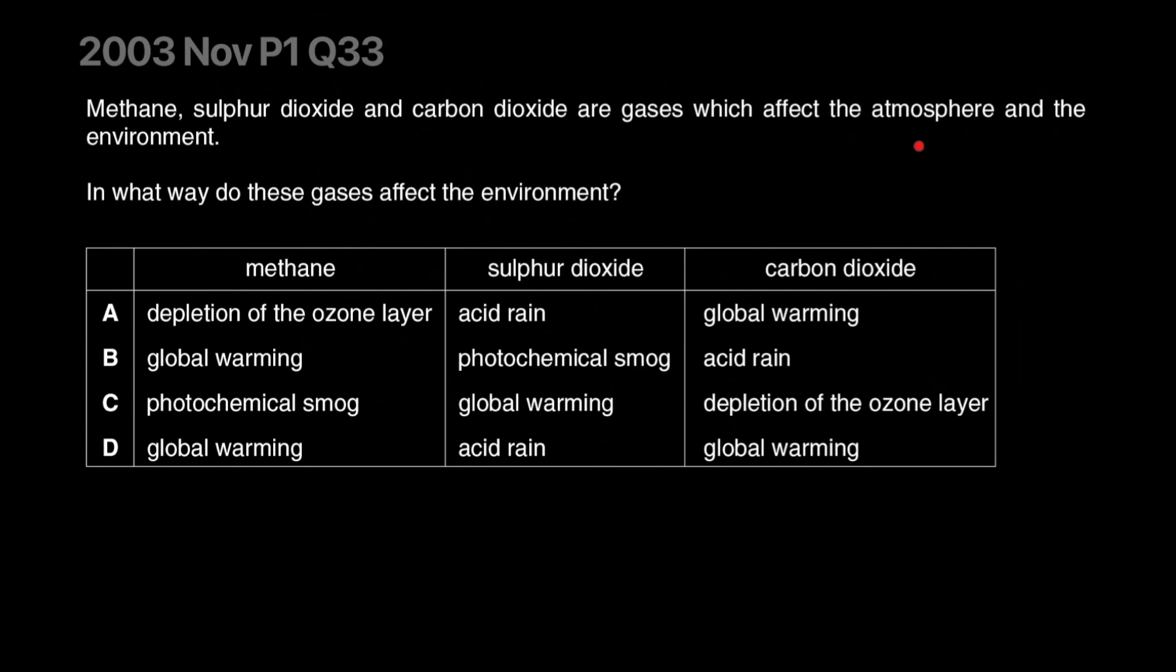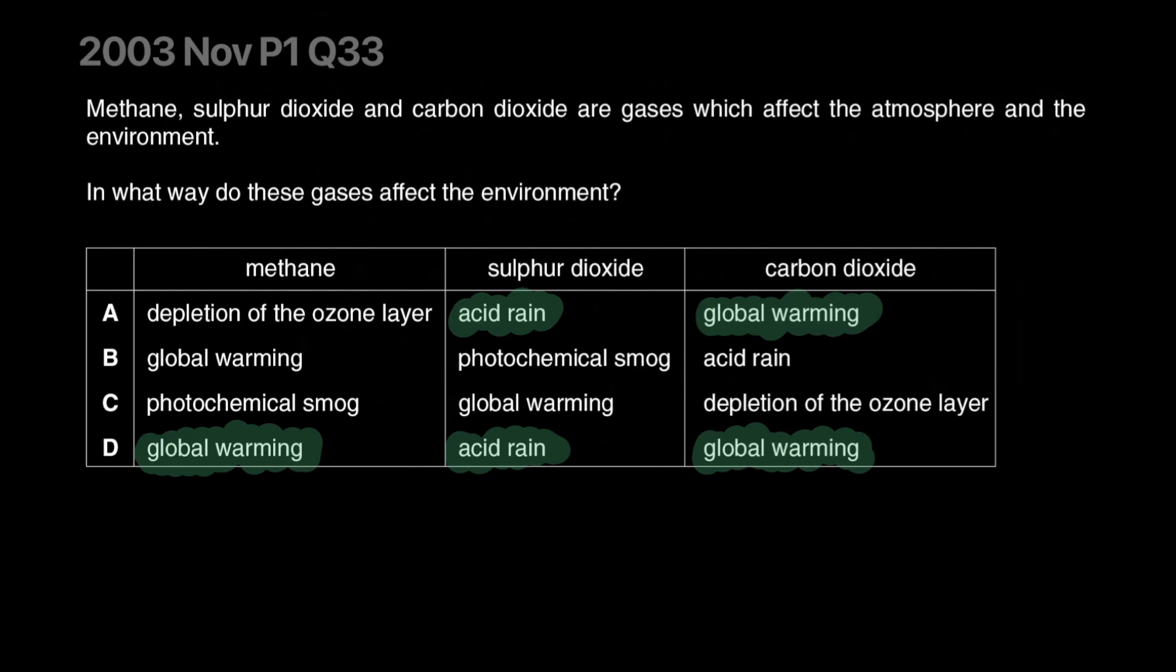Methane, sulfur dioxide and carbon dioxide are gases which affect the atmosphere and the environment. In what way do these gases affect the environment? I think everyone can jump to the conclusion that sulfur dioxide causes acid rain and carbon dioxide will cause global warming. Methane does cause global warming. It's a more potent global warming gas, but it doesn't live in the atmosphere for as long as carbon dioxide. Once carbon dioxide is there it just stays. Depletion of ozone layer is only because of CFCs. So you have D as your most likely answer.